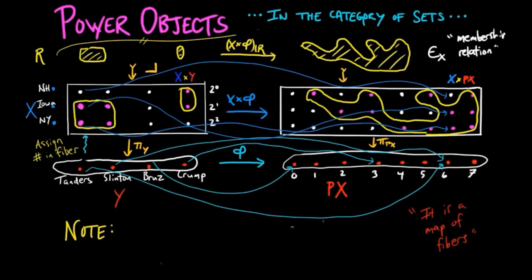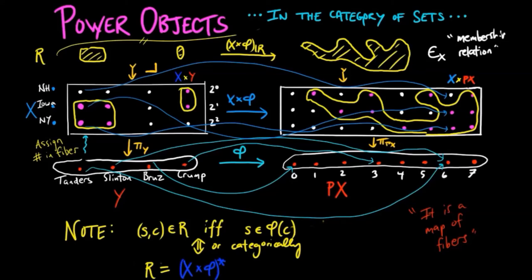More in fact is true. Note that the pair SC is in the relation R if and only if S is in phi C. Or categorically, R is the pullback of the membership relation along X cross phi.